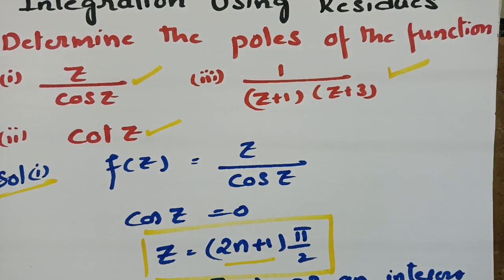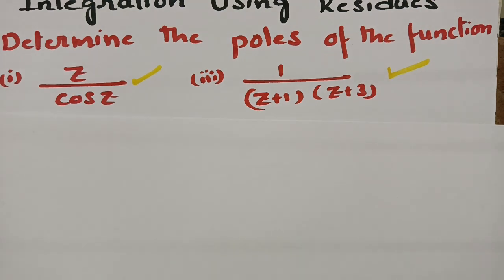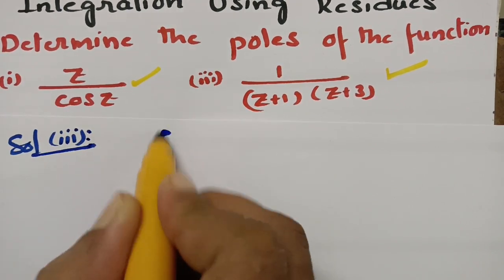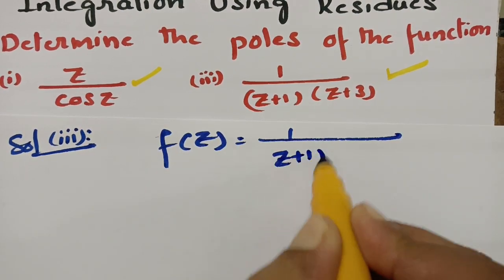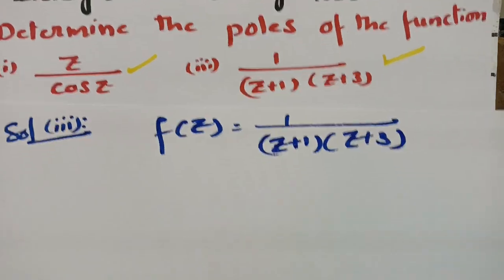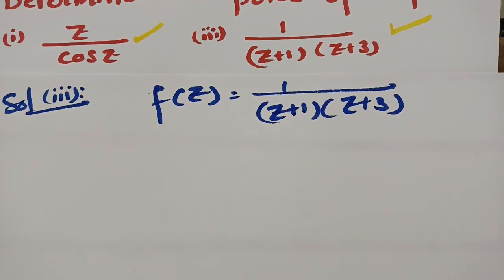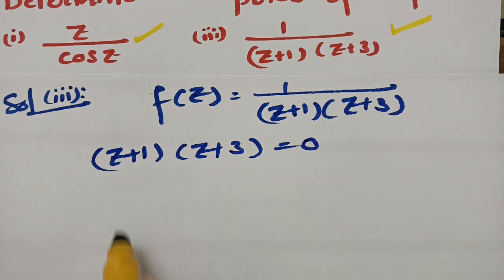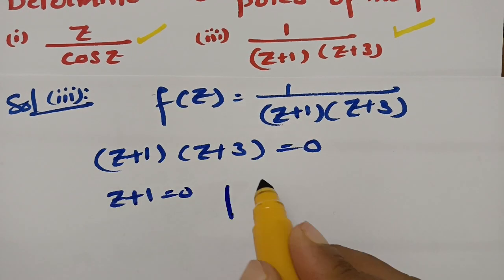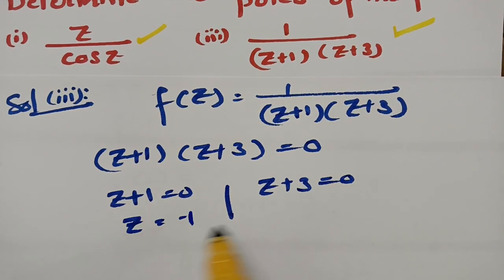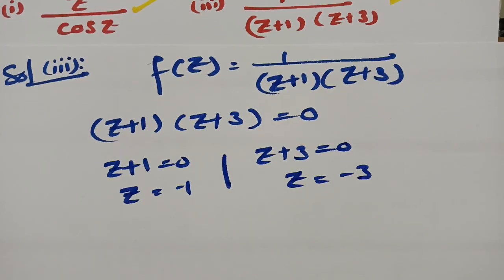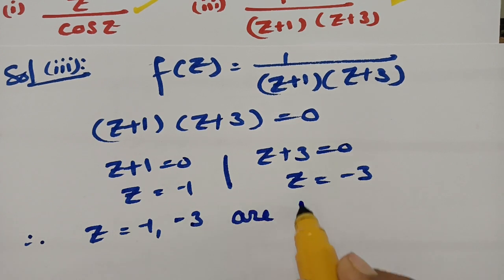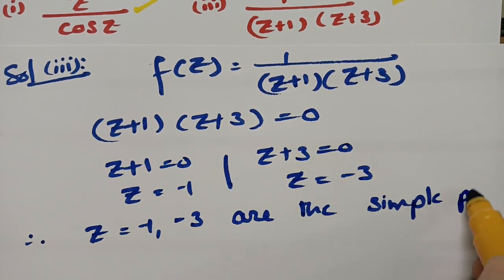For the third question, f(z) is given as 1 by (z+1)(z+3). In order to find the poles, we have to equate the denominator to 0: (z+1)(z+3) = 0. Equating each factor to 0, z + 1 = 0 gives z = -1, and z + 3 = 0 gives z = -3. Therefore, for the function f(z), z = -1 and z = -3 are the simple poles.